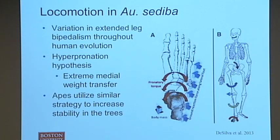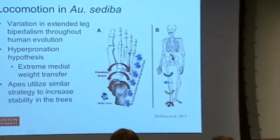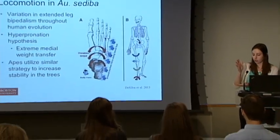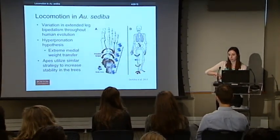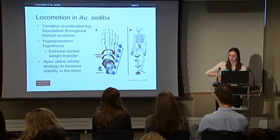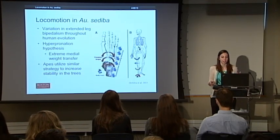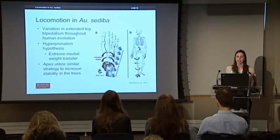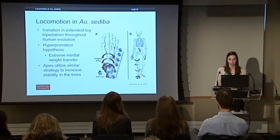Hyperpronation is similar to human gait. In normal human gait, you generally strike the ground with the heel of your foot, and then your foot stays relatively level until your toes push off. In hyperpronation, you strike the ground with the outside part of your foot, and this causes a torque which forces you to roll inward, positioning all your weight on the inside of the foot before push-off. We think apes utilize something similar when climbing in order to increase their stability.